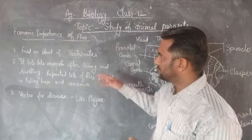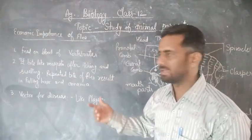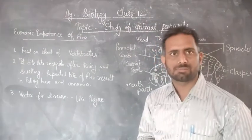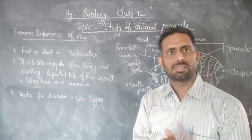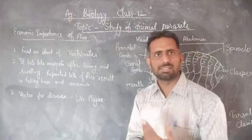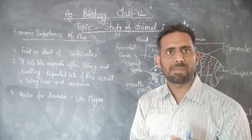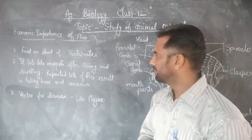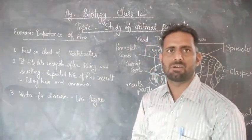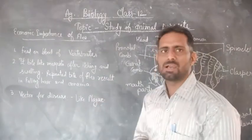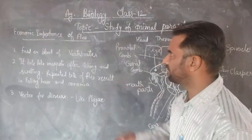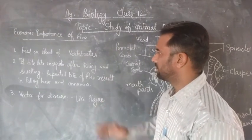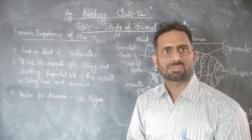Due to its bite, which is like a mosquito bite, itching and swelling occur. In some weeks the affected area becomes rough or peppery. Repeated biting by fleas results in hair loss and anemia. It is very harmful as very dangerous diseases like plague are caused by it.